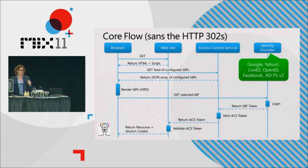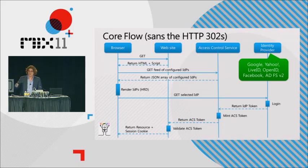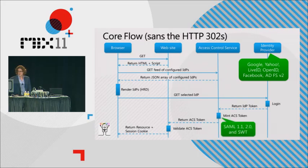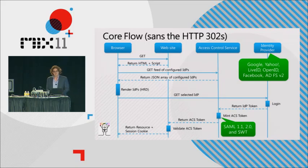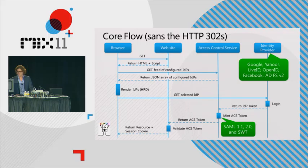After the website gets the token, it validates it and returns a response along with session state handling - maybe shredding it into a session cookie, or minting its own session cookie and writing the token to a store. The access control service can mint SAML 1.1 tokens, SAML 2.0 tokens, and Simple Web Tokens. The website can be built with any module - this works in PHP without requiring a heavyweight library. If you're using Simple Web Tokens, you can validate them really simply. With Windows Identity Foundation, there's literally zero code needed.